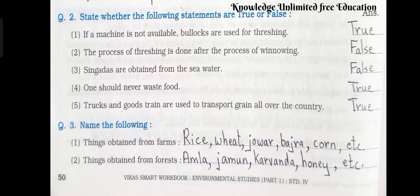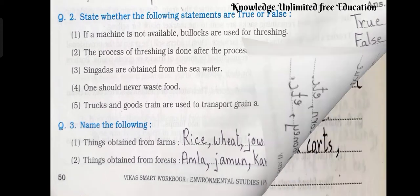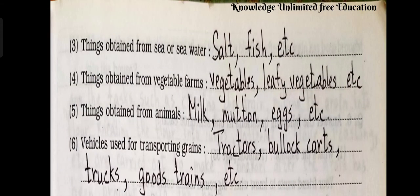Question number 3. Name the following. Number 1: Things obtained from farms. Answer: rice, wheat, jawar, bajra, corn, etc. Number 2: Things obtained from forest. Answer: amla, jamun, karwanda, honey, etc. Number 3: Things obtained from sea or sea water. Answer: salt, fish, etc.